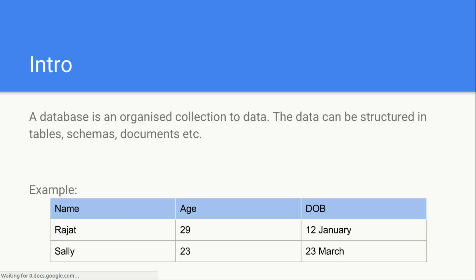A database is an organized collection of data — there's a typo in the slides which will be corrected. The data is structured in some sort of tables, schemas, or documents; it depends and varies from database to database.